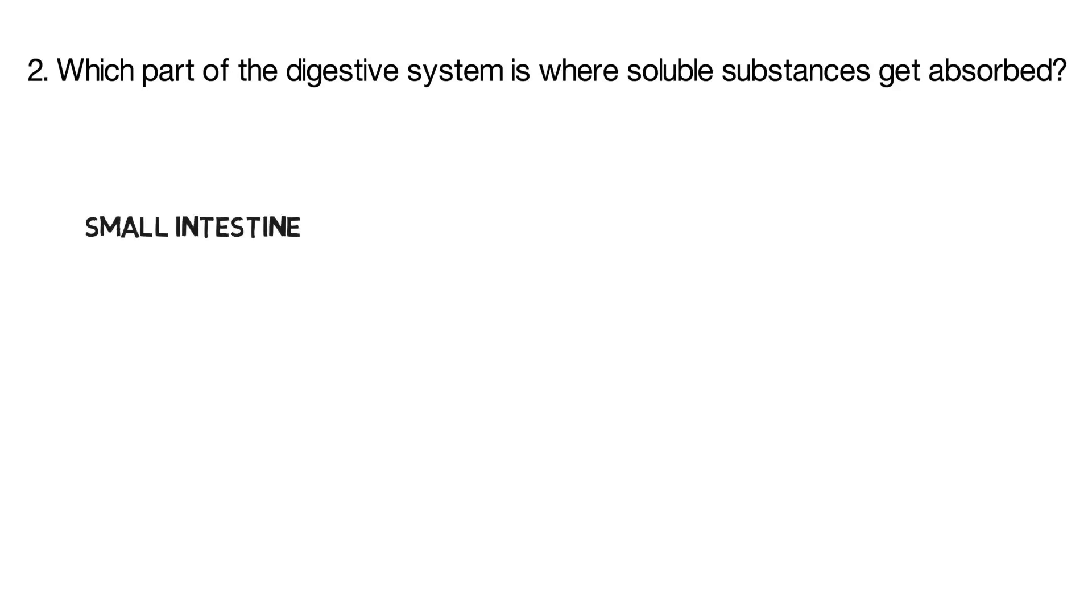Question number two. Which part of the digestive system is where soluble substances get absorbed? Is it the small intestine, the liver, the pancreas or the stomach?